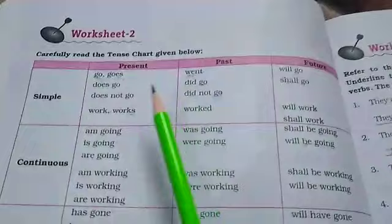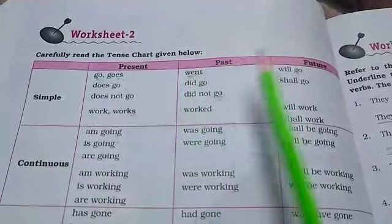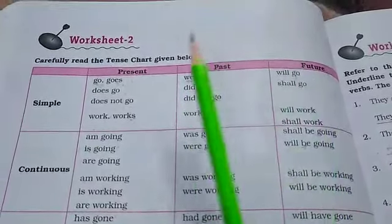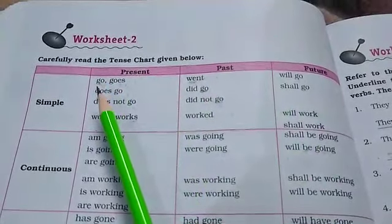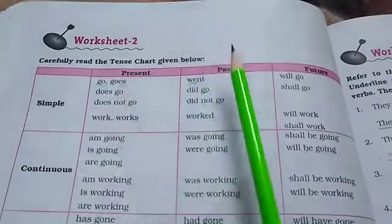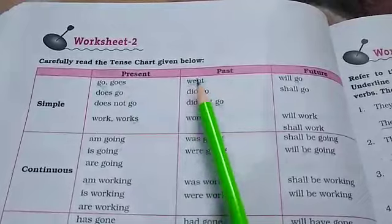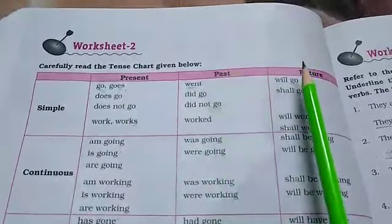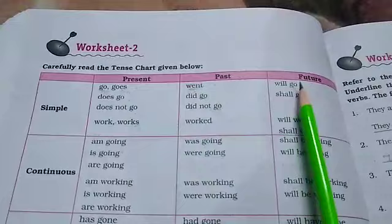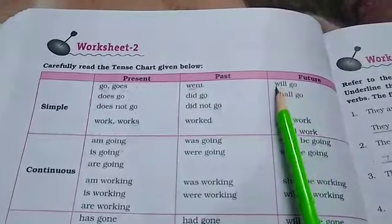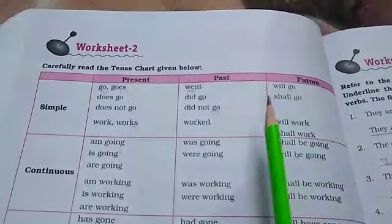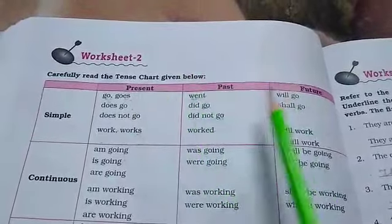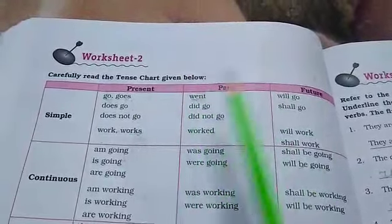The verb form has to change according to tense. In the present tense, we use the first form of the verb. In the past tense, we use the second form of the verb. And in the future tense, we use will with the first form of the verb. That is how verb forms change according to the tenses.